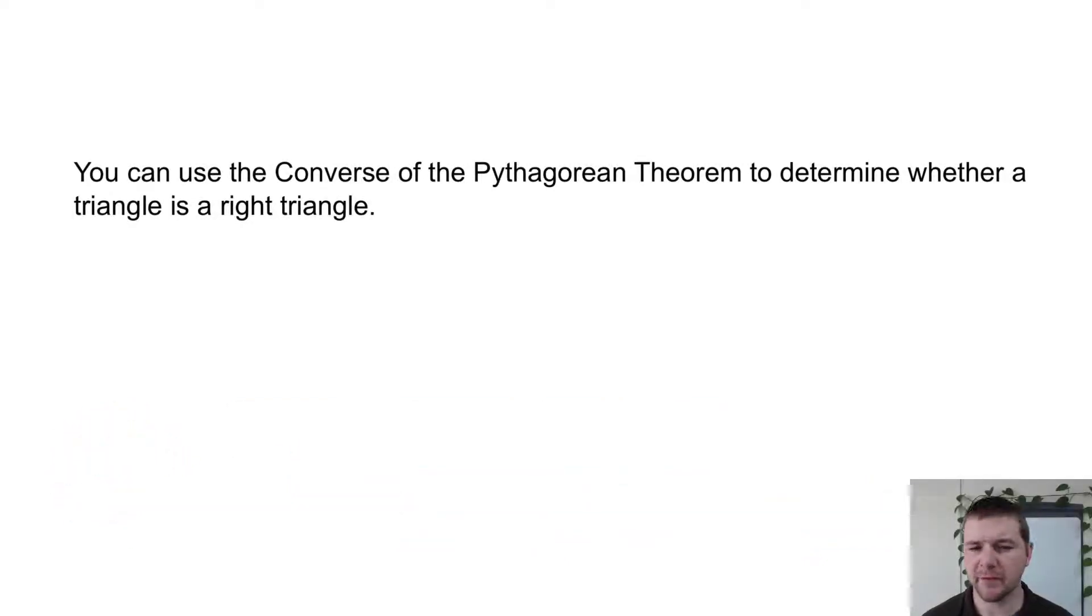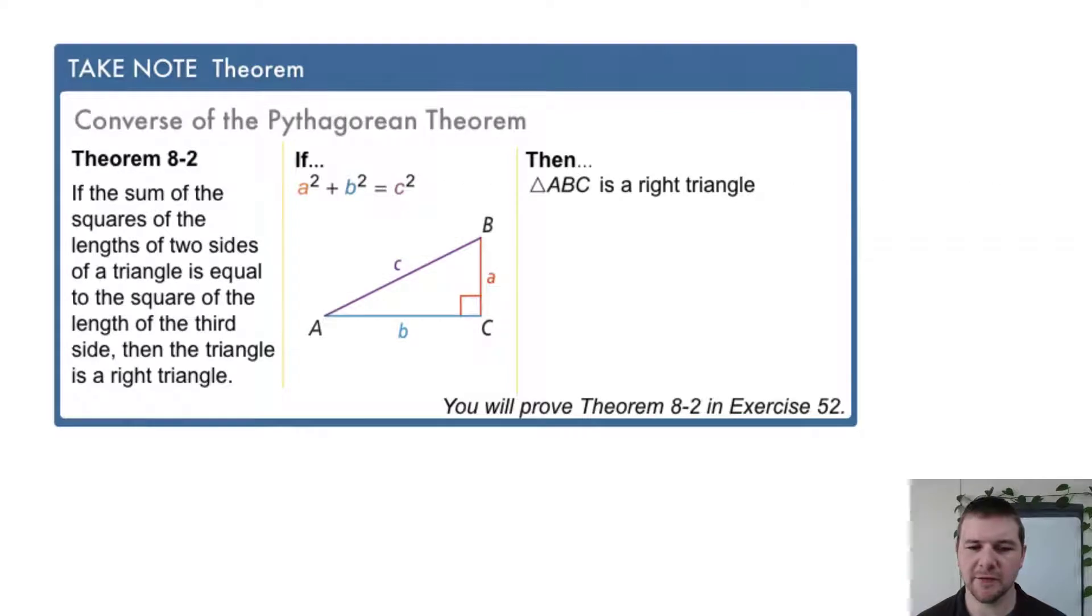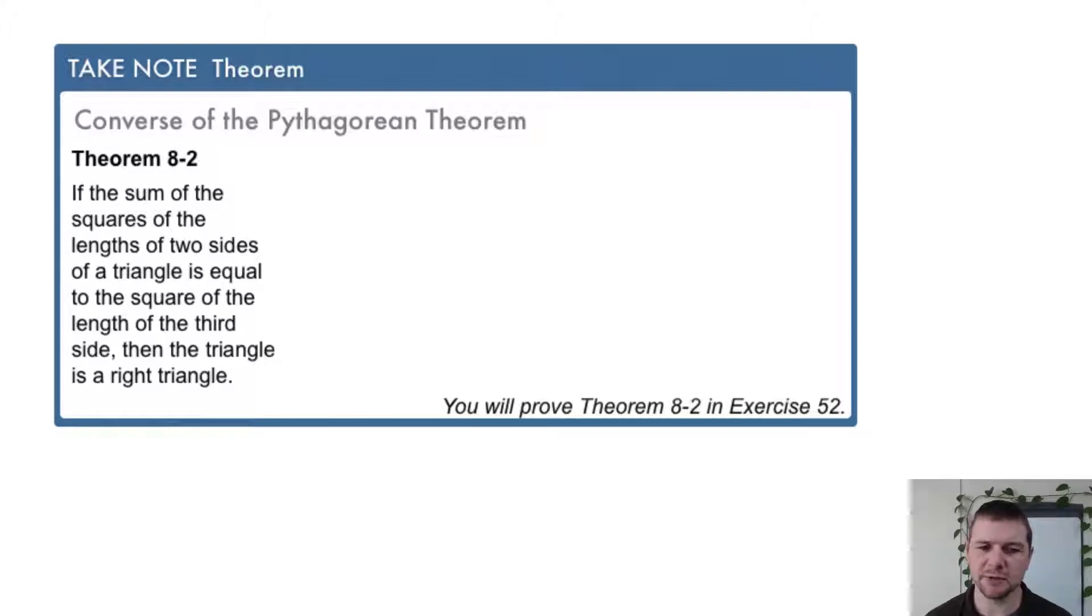You can use the converse of the Pythagorean theorem to determine whether a triangle is a right triangle. The converse of the Pythagorean theorem, Theorem 8-2, states: if the sum of the squares of the lengths of two sides of a triangle is equal to the square of the length of the third side, then the triangle is a right triangle.